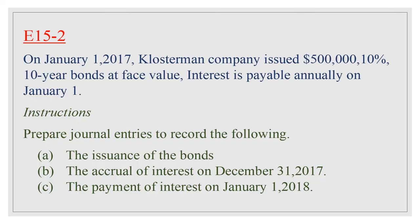Exercise 15-2: On January 1, 2017, K Company issued $500,000, 10%, 10-year bonds at face value. Interest is payable annually on January 1. Instructions: prepare journal entries to record the issuance of the bonds, the accrual of interest on December 31, 2017, and the payment of interest on January 1, 2018.